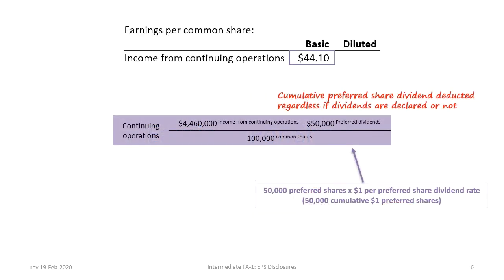Proper disclosure of EPS on the income statement includes two columns, one for basic and one for diluted. Please refer to the data, and you'll notice that the company has 50,000 convertible $1 preferred shares outstanding. This means that the preferred shareholders are entitled to a $1 dividend per share only when dividends are declared in the year. Cumulative dividends would have a dividend entitlement even if no dividends are declared, so we would include it in the calculation of EPS whether or not dividends are declared.